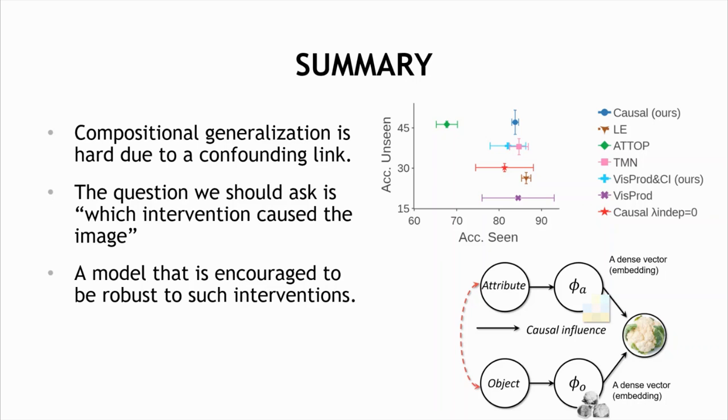Now, this work focused on the case where attributes and nouns are independent, but often they do exhibit useful dependencies. We expect that the causal approach can be used as a useful prior for those cases. And finally, we handle here the specific case of attributes and nouns, but compositionality is encountered widely.